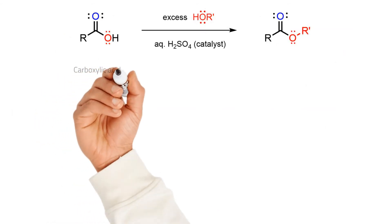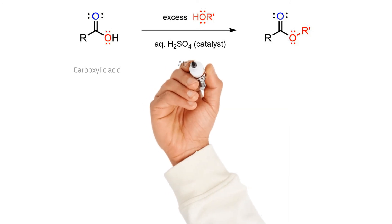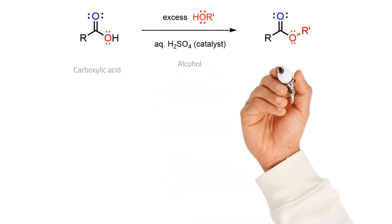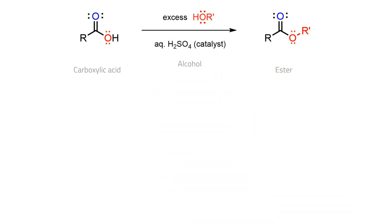Overall, the Fischer esterification involves a carboxylic acid reacting with an alcohol in the presence of an acid catalyst to produce an ester. The reversible reaction may be driven to the product by adding an excess of the alcohol or by removing the product from the reaction mixture.